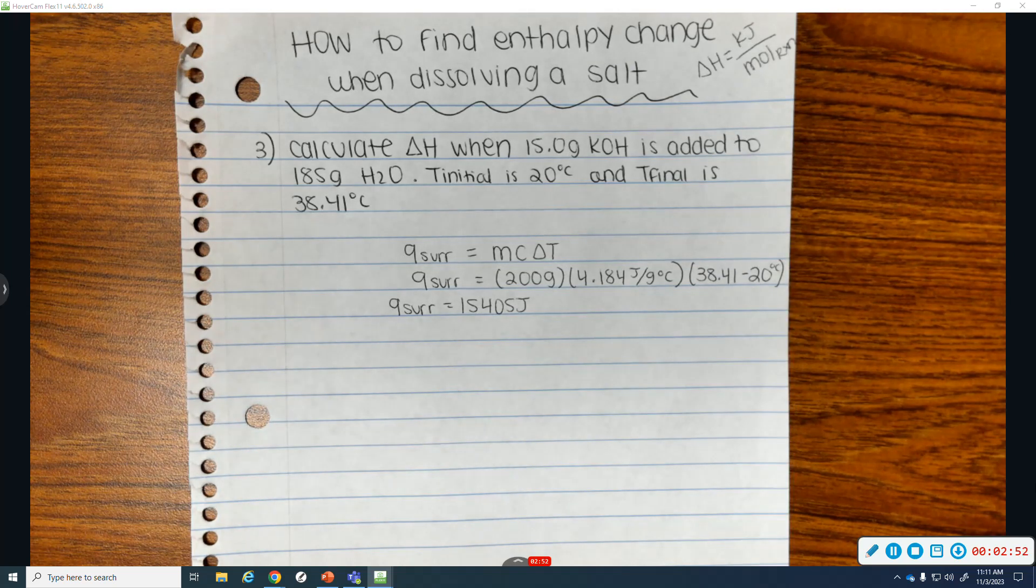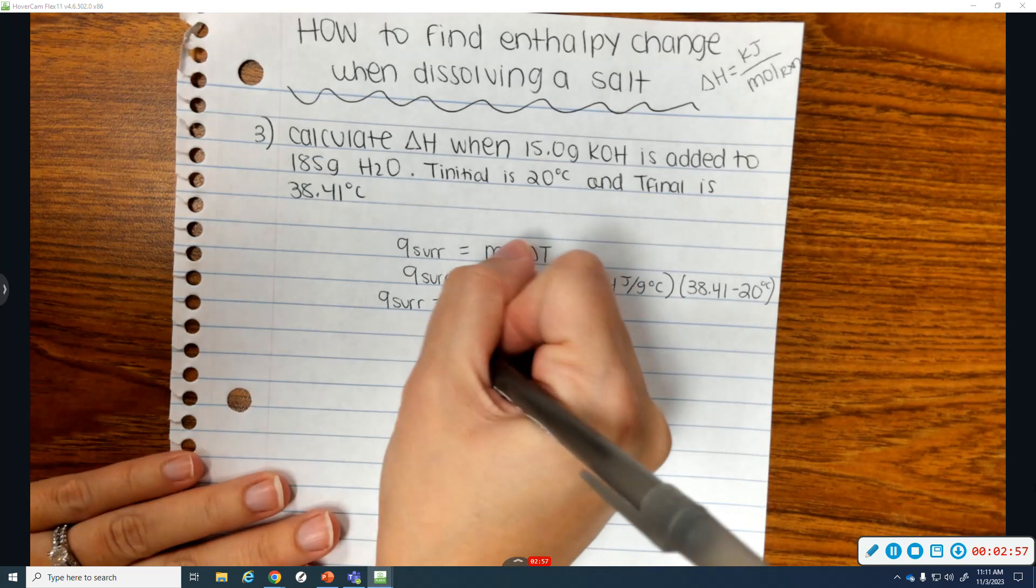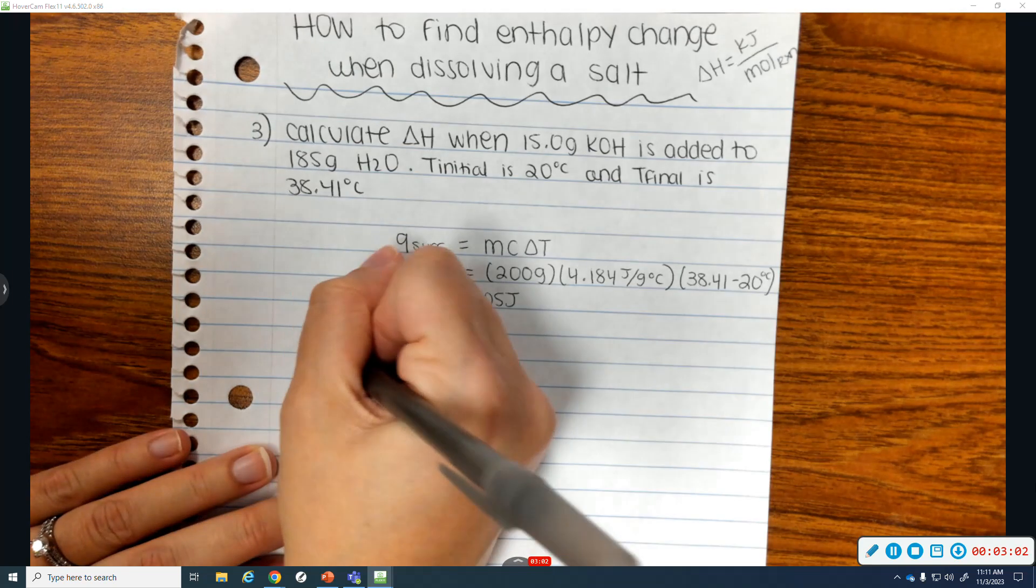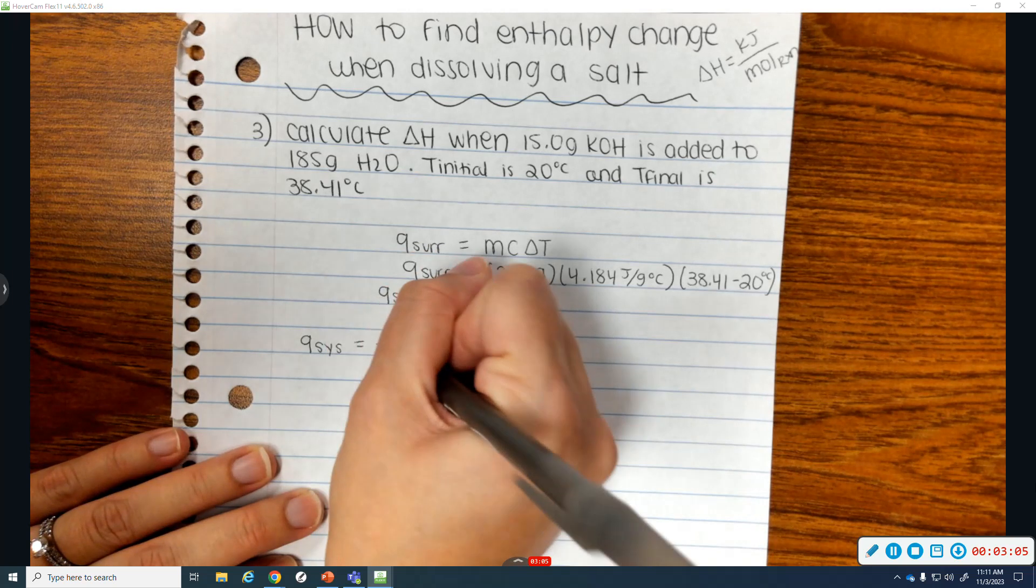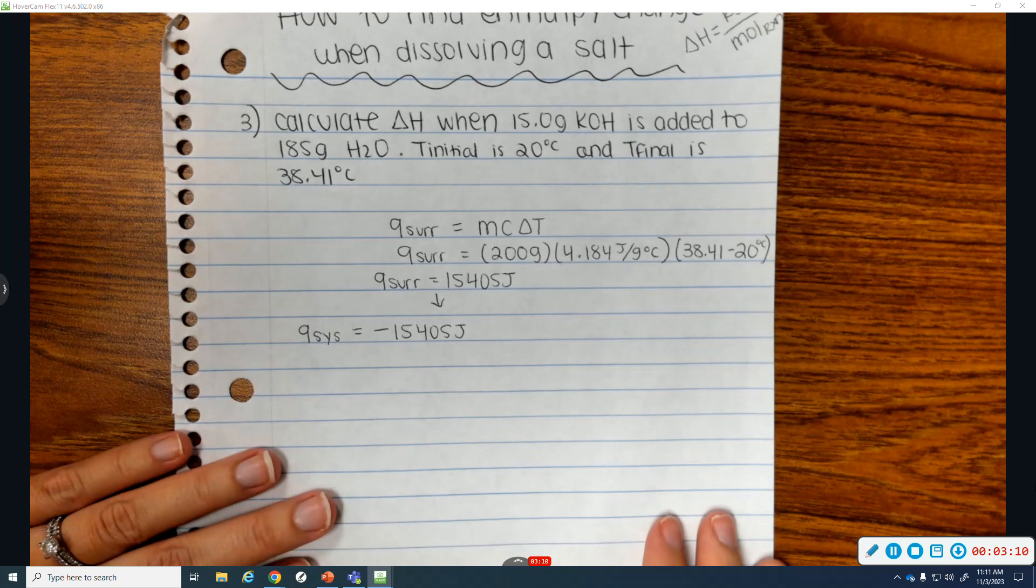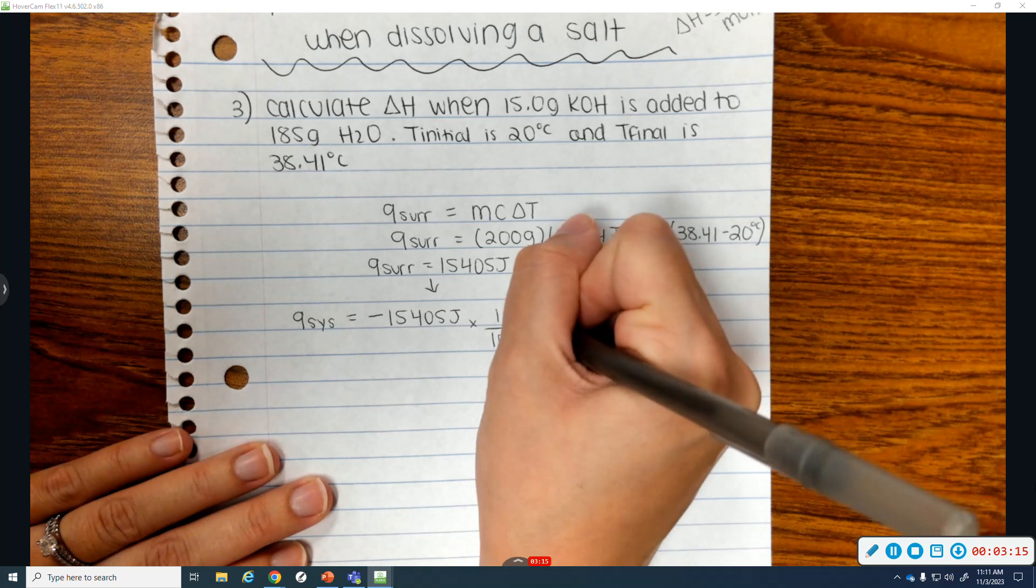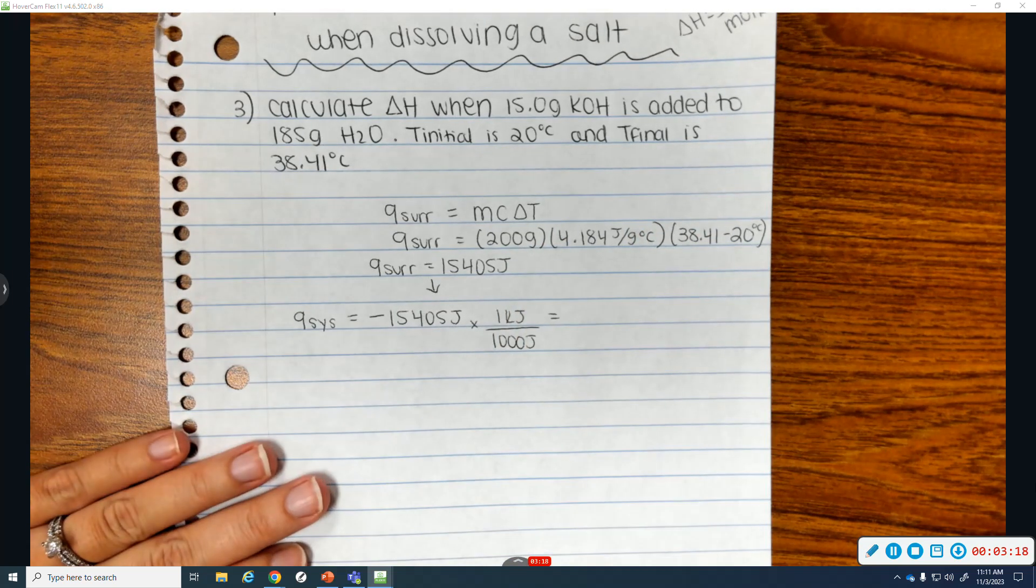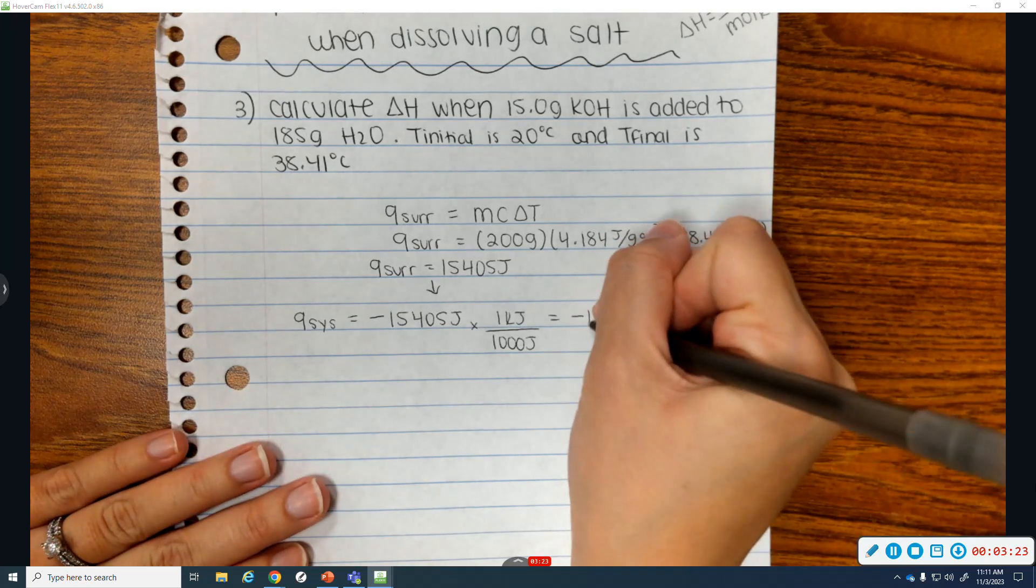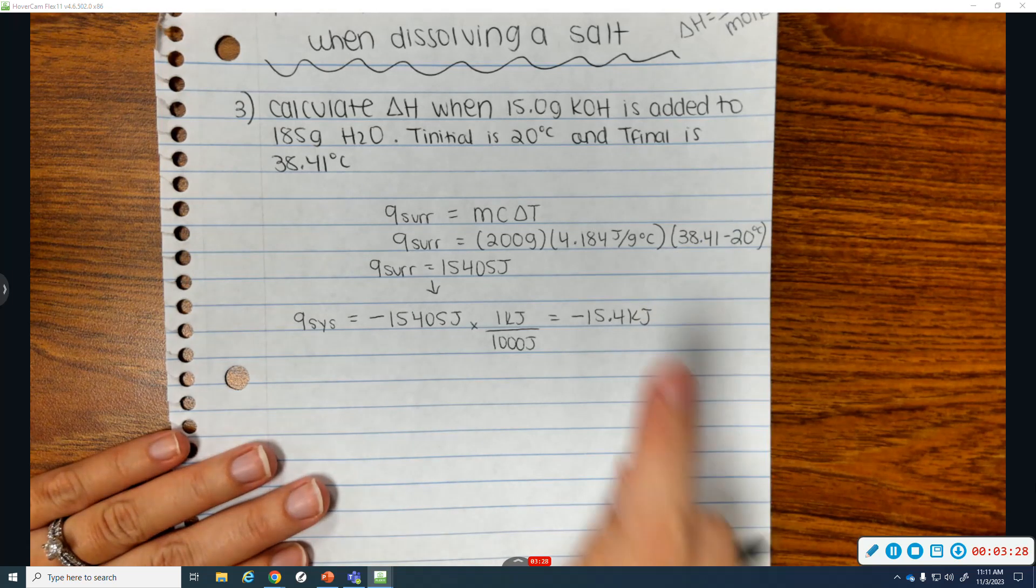So what I need to do is you have to change the sign to get the Q of your system, which in this case is the KOH dissolving in water. So when I change the sign, it becomes a negative 15,405 joules. And you want to change it to kilojoules. To go from joules to kilojoules, you divide by 1,000. So I get that the heat that my KOH, when it dissolved, gave off was negative 15.4 kilojoules. That is the heat for my system.